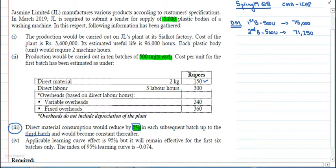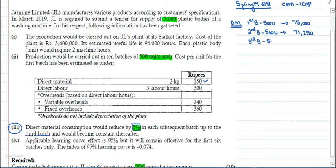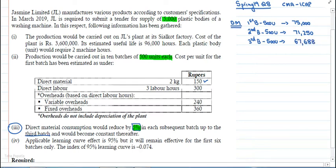After that, again the cost will reduce by 5%. When we make the third batch, the 500 units of the third batch will cost Rs. 71,250 multiplied by 95%, which is Rs. 67,688.